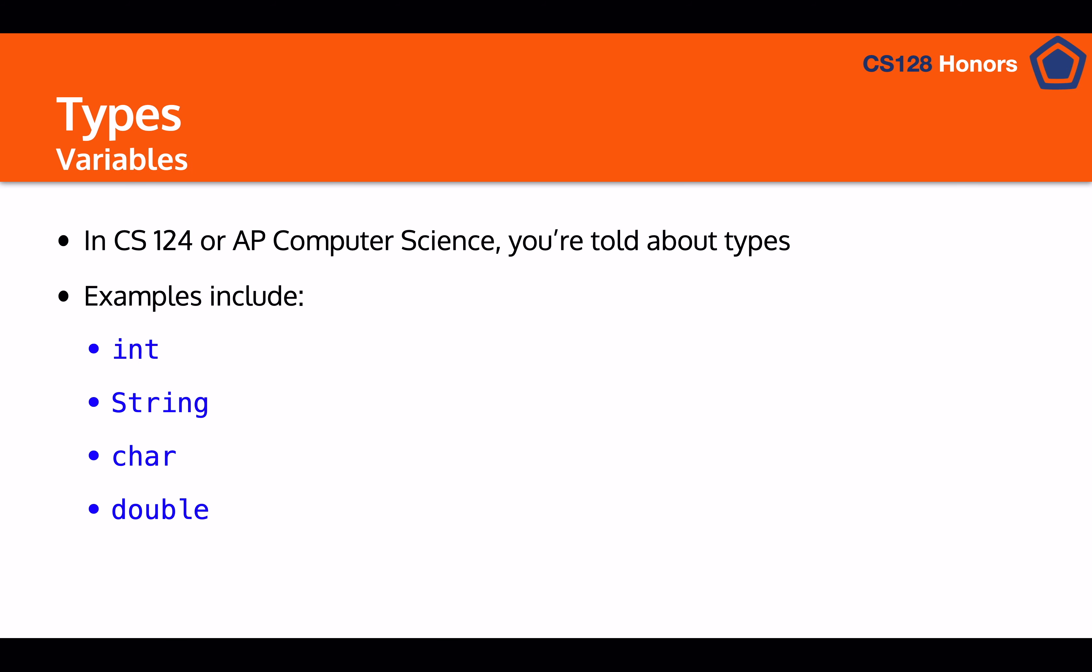And what's nice about Rust is that the compiler is able to do this for us, and it's able to infer what type of variable is simply by the constant that you use to initialize it.